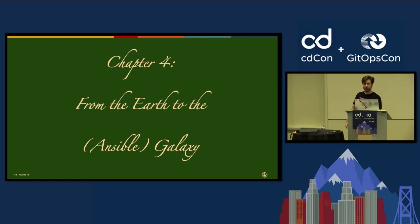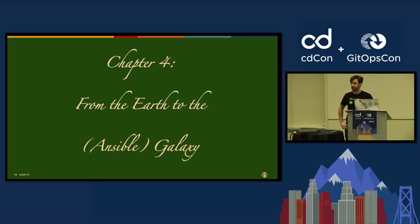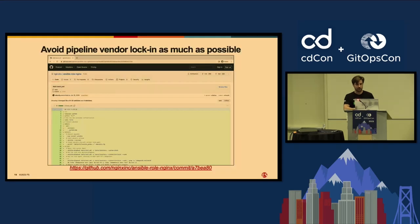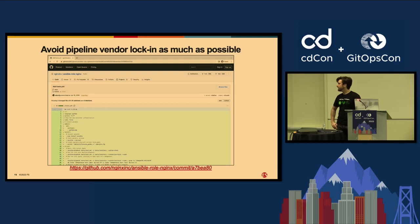With that we can move on to chapter four: from the Earth to the Ansible Galaxy — some of the lessons I've learned whilst developing the Ansible Nginx role. Ansible Galaxy, for those who might not know, is the Ansible open-source marketplace. Lesson number one: avoid pipeline vendor lock-in as much as possible.